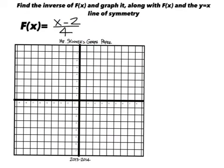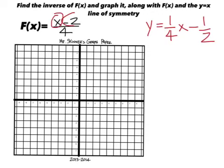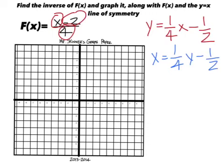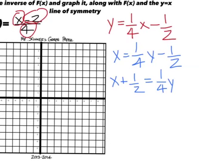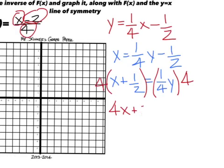We can rewrite the next one as y equals one-fourth x minus one-half by dividing through by four. Swap x and y to prepare for solving for y, giving x plus one-half equals one-fourth y. Multiply both sides by four to get rid of the fraction, so the inverse is y equals four x plus two.